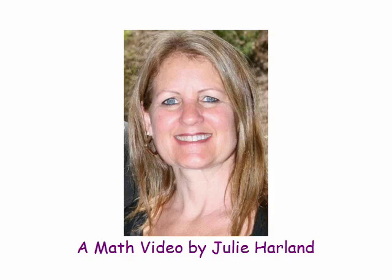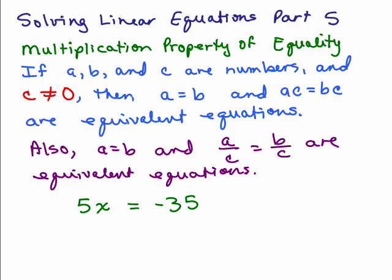Math is cool and you can do it. This is part five of solving linear equations. We're going to be going over the multiplication property of equality which says if A, B and C are numbers and C is not equal to zero,